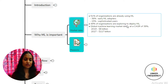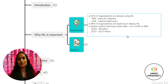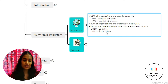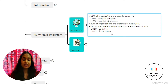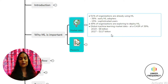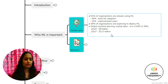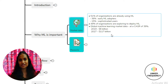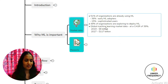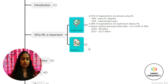Looking at the global market data, machine learning is growing at a CAGR of 39%. In 2019, the market was around 8 billion dollars, but by the end of 2027 it is expected to reach around 117 billion dollars. Looking at this data, you can see there is huge scope in this domain, with very good knowledge-based experience available for newcomers interested in learning machine learning.